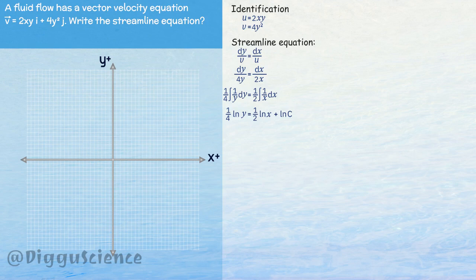Multiplying all coefficients by 4: ln y is equal to 2 ln x plus 4 ln c. Using logarithmic properties: ln y is equal to ln c to the power of 4 x squared. Then y is equal to c to the power of 4 x squared. This is the streamline equation of fluid flow.